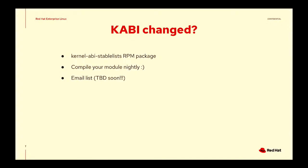A couple of things going on here. We do have the kernel ABI stable list RPM package — that's something you can look at and examine to see if any of the symbols you're interested in actually changed. We are producing that for 9.1. You could also compile your module nightly, which is actually by far the best way to go, and that's something we're telling all our partners and customers. That's easy enough to set up as a systemd timer and just have it throw an error if it didn't compile because something changed in CentOS Stream. We are also doing a global email list — that's going to be announced within the next few weeks — that anybody can sign up for, so if kernel module developers are interested they can get notifications for when these symbols change.